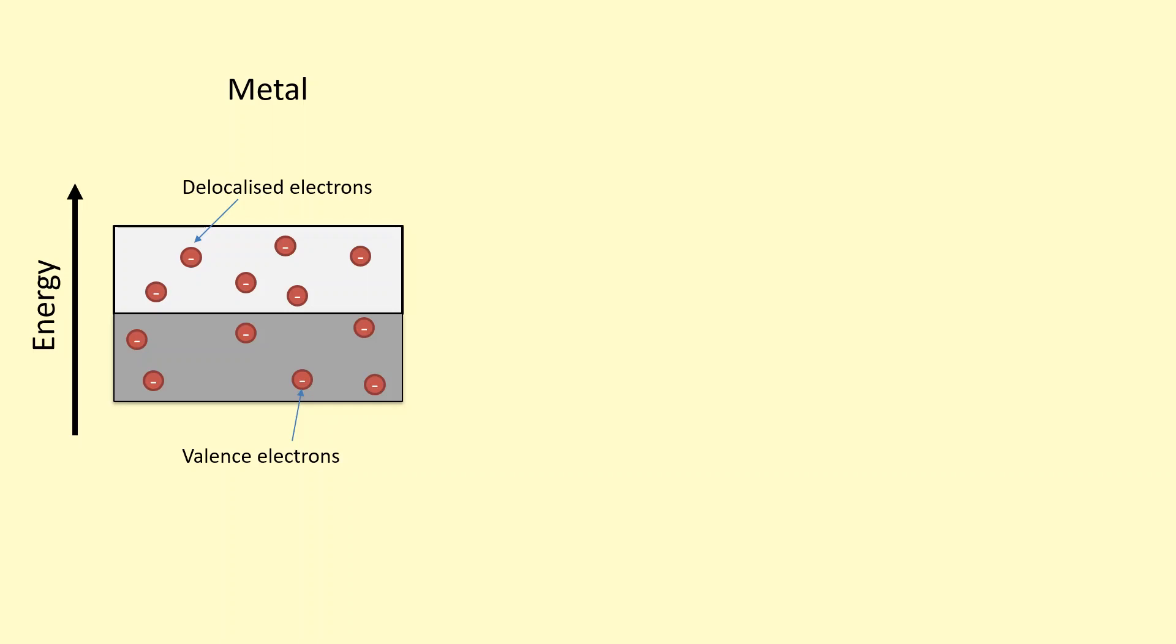This diagram is used to explain how metals work. As you can see in this band here, we have things called valence electrons, and that represents all the electrons that are stuck inside the atoms of the metal. They're stuck inside the positive ions. They can't move, so they won't carry current.